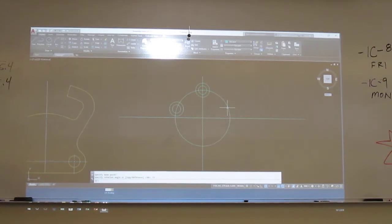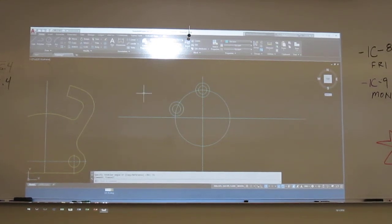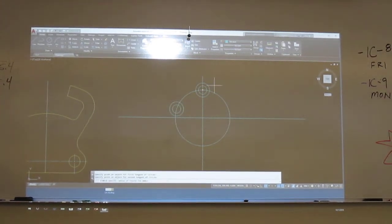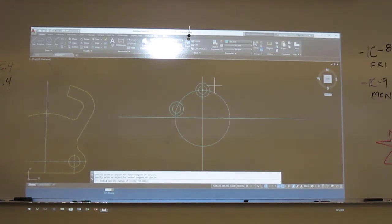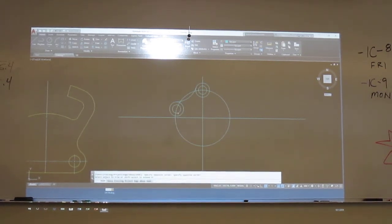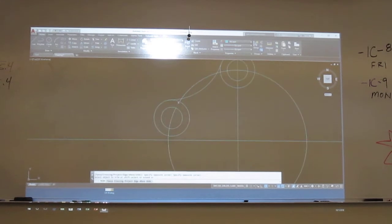Now I can do this little one that's in between, and that's a tangent tangent tangent radius. From tangent to that guy, tangent to that guy, and my radius is what? Trim that up. And let's see, these get trimmed too, right?